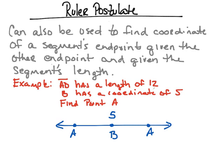The segment AB has a length of 12 units, so we should be able to find the coordinates of both possible positions of point A. If I'm at 5 and moving 12 units to the right, I take 5 and add 12, which gives me 17. So point A could be at coordinate 17.